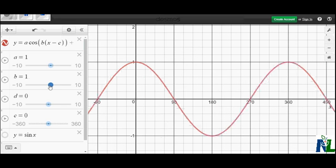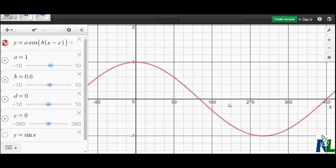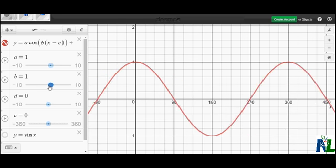So if we were to make b 0.4 or 0.6 or anything like that, we see we extend the period out, because now we're dividing 360 by something less than 1, which is going to give us a larger value. So we'll put that back to 1 now and get back to our base graph.